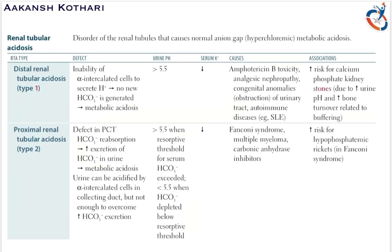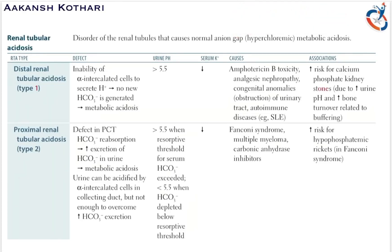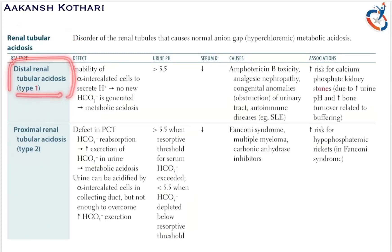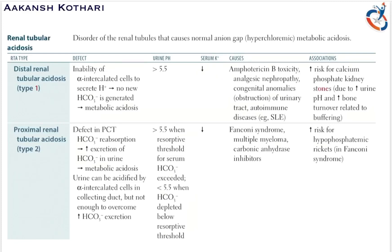During acidosis, the pH is always less than 7.4. In distal renal tubular acidosis, the urine pH is more than 5.5 and less than 7.4. Additionally, distal RTA is a hypokalemic state, meaning the serum potassium concentration is decreased.